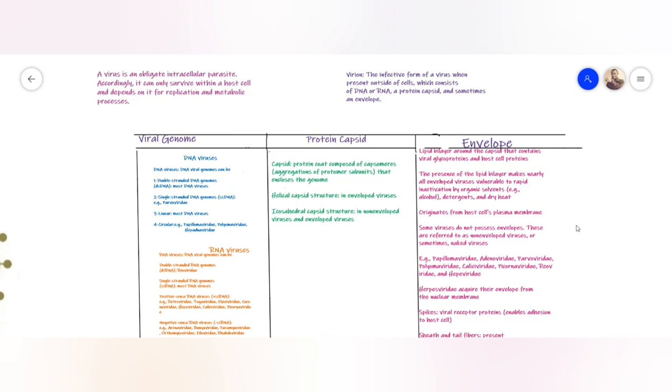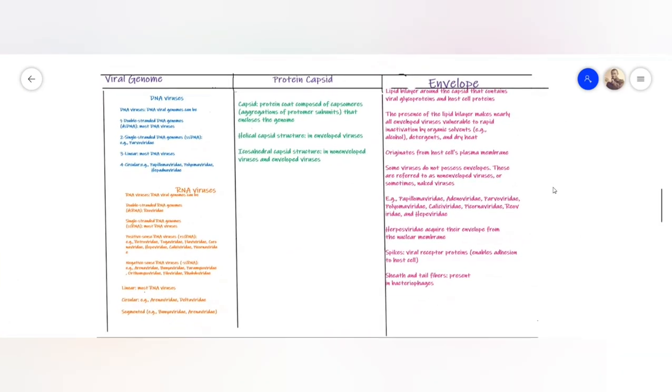This envelope originates from the host cell's plasma membrane. Some viruses don't contain this envelope and those are referred to as naked viruses. Examples include Papillomaviridae, Adenoviridae, Parvoviridae, Polyomaviridae, Caliciviridae, Picornaviridae, Reoviridae, and Hepadnaviridae. These are non-enveloped. But Hepadnaviridae is special because it acquires its envelope from the nuclear membrane instead of the plasma membrane.